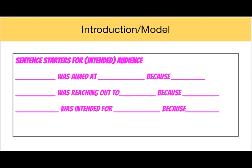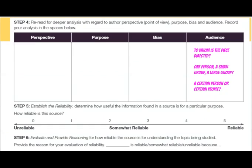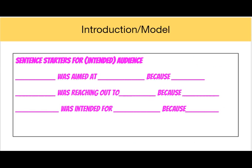And finally, the intended, or I pin the word intended, audience - meaning who they wanted the audience to be. Because it's not always who they wanted it to be. If you go back here, whom the piece is directed: one person, small group, large group, certain person or number of people. It may not always be who they want.